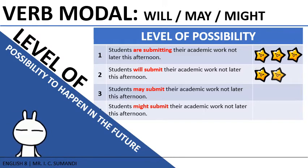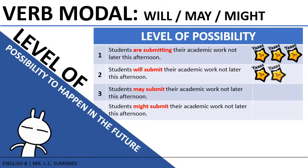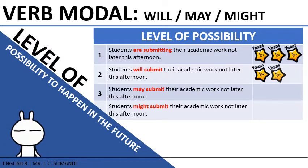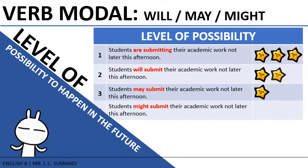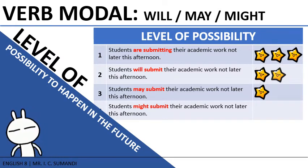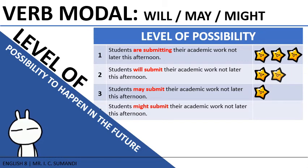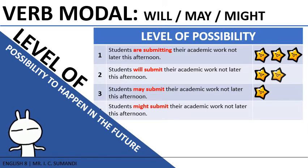Number three: 'Students may submit their academic work not later than this afternoon.' May has lesser possibility — around 20% to 40% chance of happening. Number four: 'Students might submit their academic work not later than this afternoon.' Might has the least possibility; it may happen by coincidence or won't happen at all.